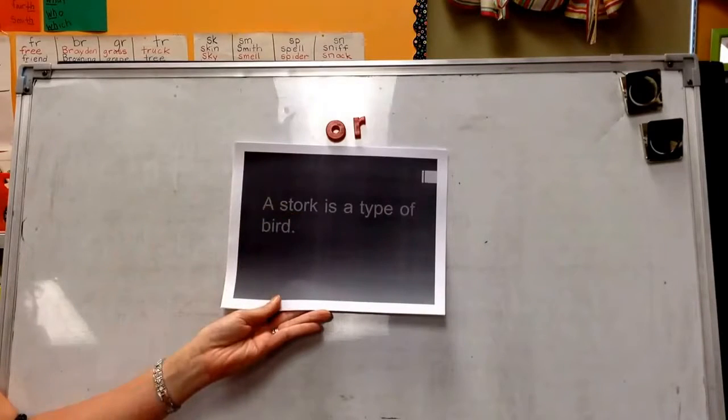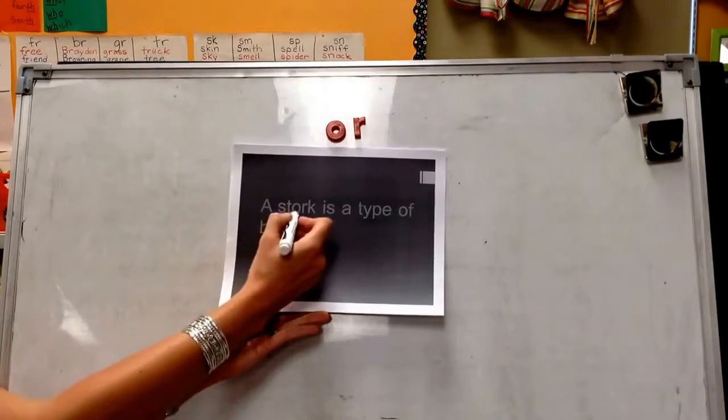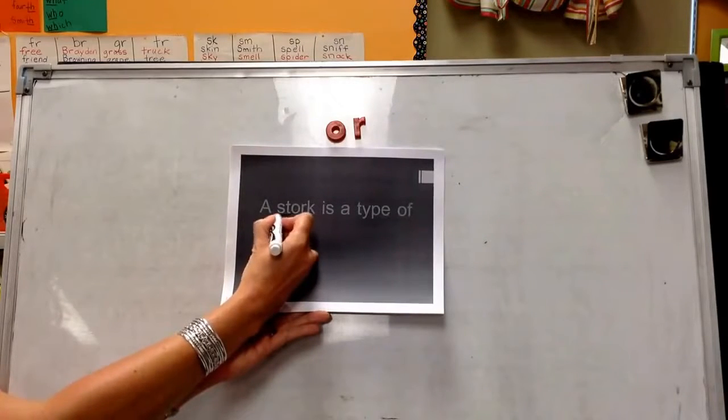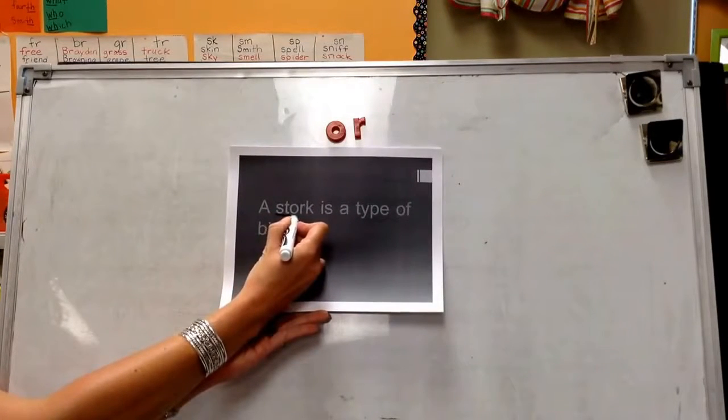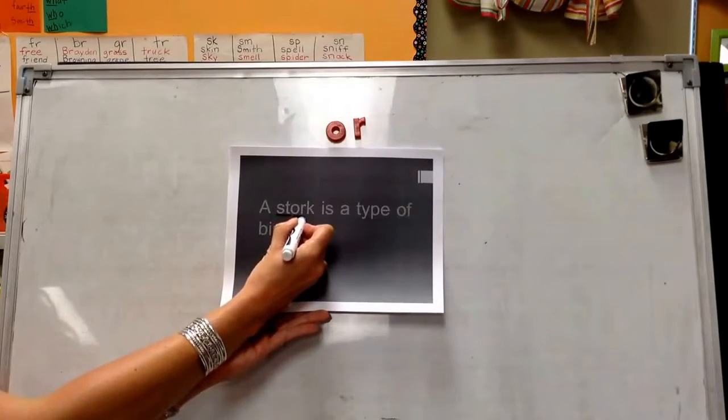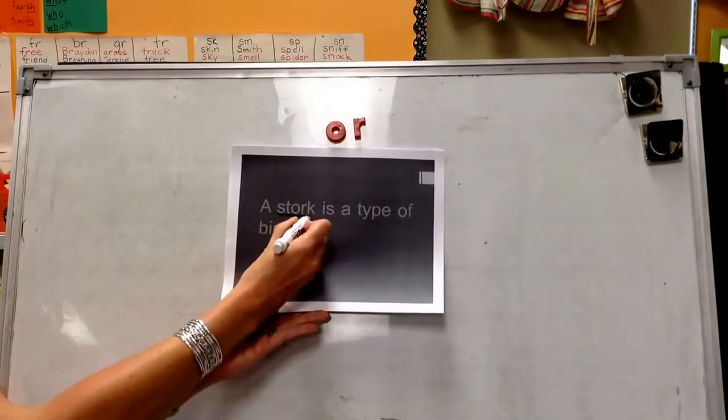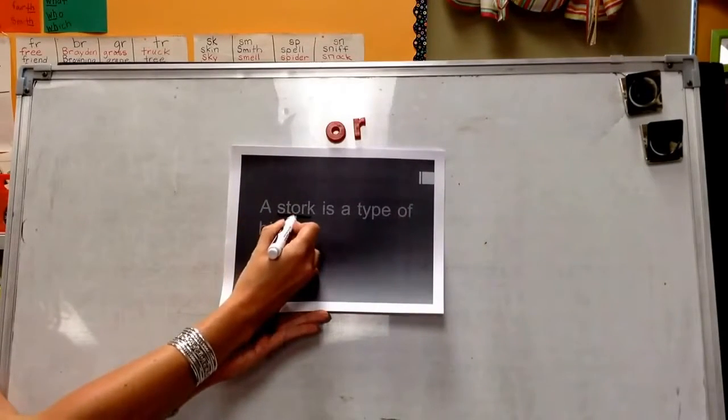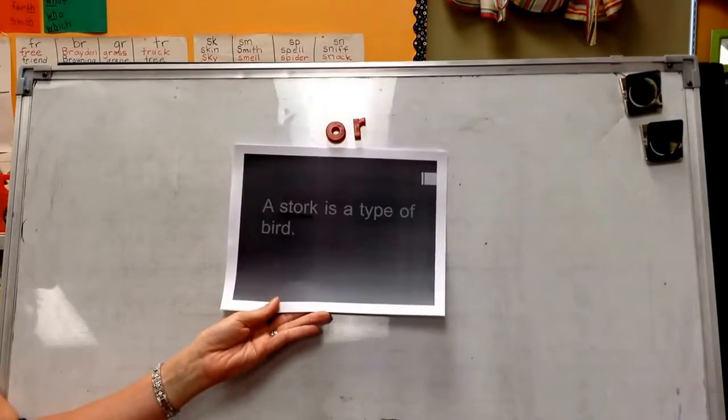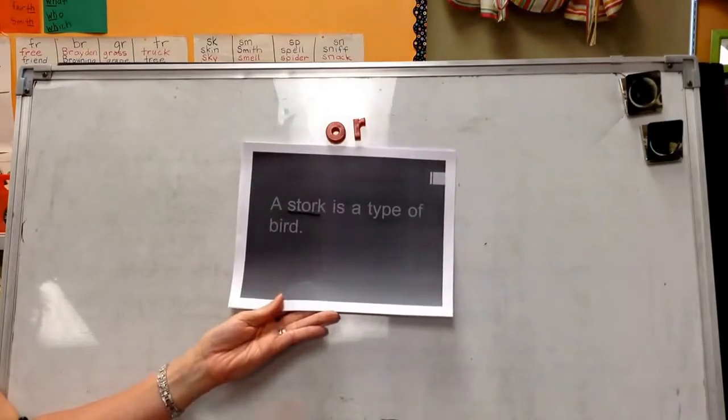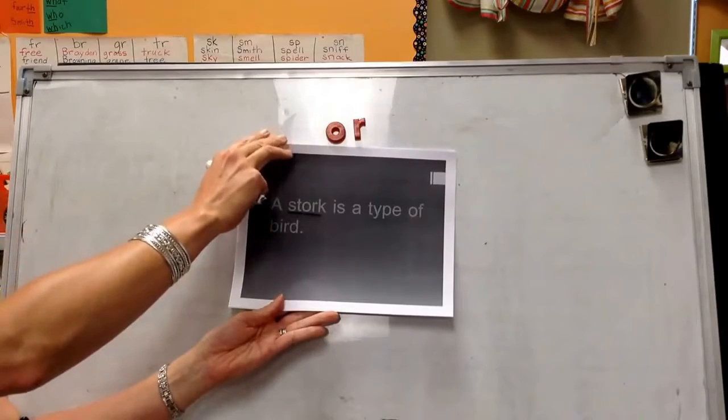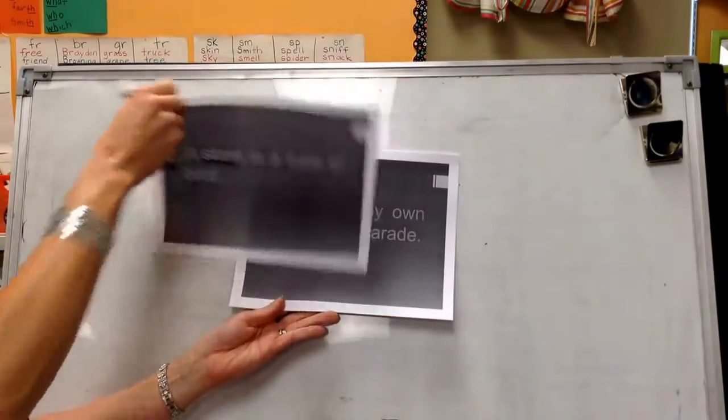A blank. I'm not sure what this word is, so I'm going to look for parts to help me figure it out. I see S-T-ST and then I see O-R or the stork, excuse me, a stork is a type of bird. So I'm looking for parts and when I see O-R I'm going to read it as OR. Let's do one more.